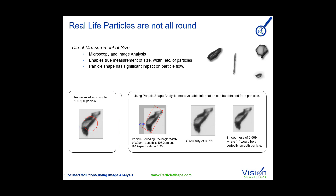So we have direct measurement techniques. Direct measurement techniques are microscopy and image analysis — image analysis really being a dynamic, automated version of microscopy. With direct measurement techniques, we can render particles as if they're round. Here's a perfect example of a particle that we can represent as a 100-micron particle if we assume it's round. But obviously, if we assume this particle is round, it's not going to flow very well if it's combined with different shapes. If they're very irregular in shape, they may not flow very well.